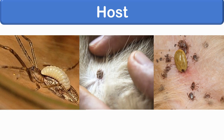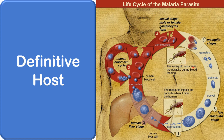The host may be of the following types. The definitive host is the host in which the adult parasite lives and undergoes sexual reproduction. For example, the mosquito acts as definitive host in malaria. The gametocytes ingested by the mosquito during a blood meal undergo sexual reproduction inside the mosquito's gut, forming an ookinete, followed by an oocyst, and finally releasing sporozoites that are infective for humans.